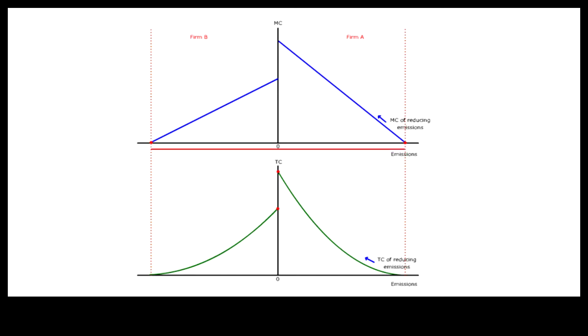The red bar at the bottom of the upper panel indicates the total unregulated level of pollution from Firm A and Firm B. If each firm is required to reduce pollution by the same percentage, the total pollution will be reduced as shown. Such distribution of pollution reduction results in unequal marginal cost between the two firms. The marginal cost at Firm A is much higher than the marginal cost at Firm B.